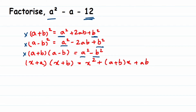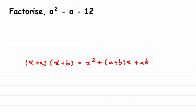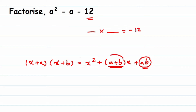So we have to use the fourth identity: x plus a into x plus b. This method is called splitting the middle term. Looking at the identity, a plus b gives the sum and a times b gives the product. In our question, the last term is minus 12, so I need two numbers whose product is minus 12, and whose sum is minus 1 — the coefficient of the middle term.